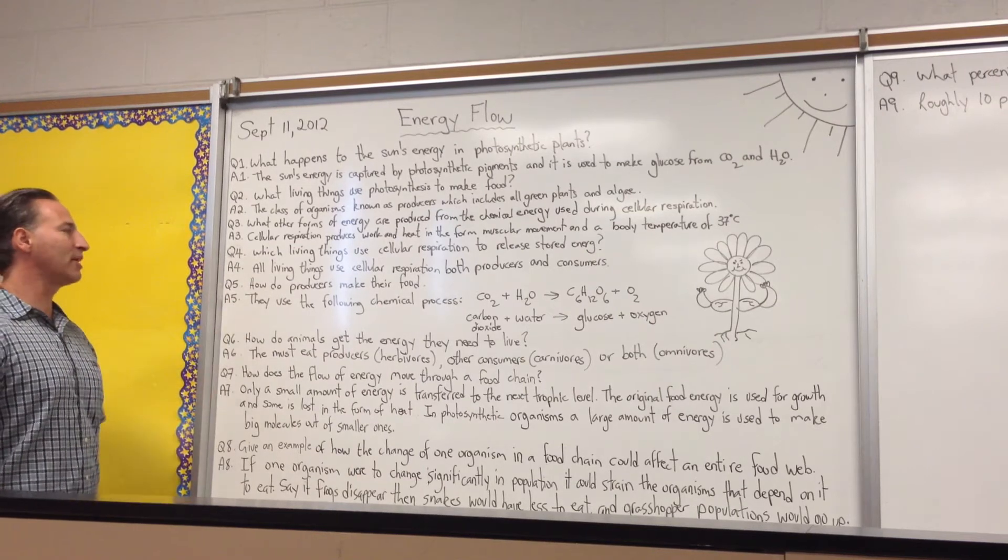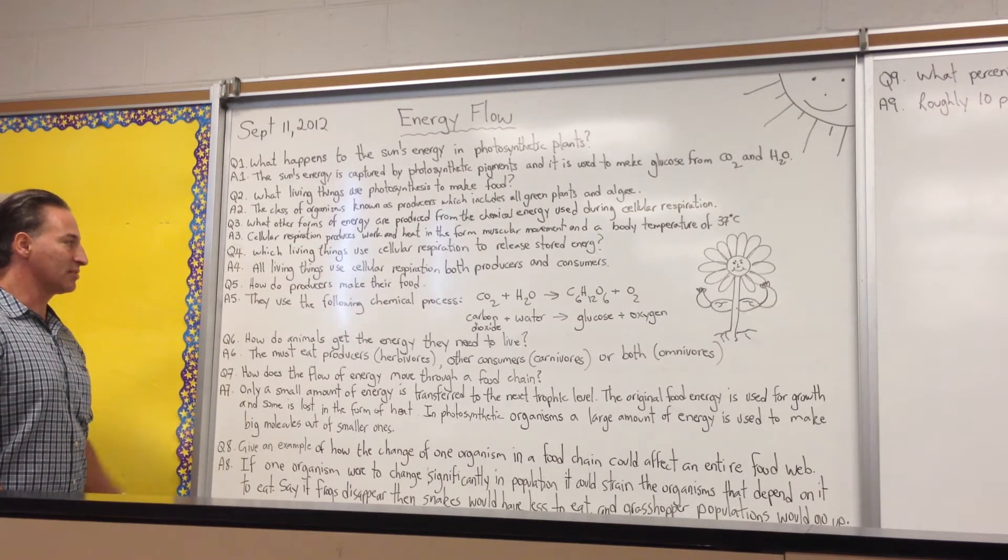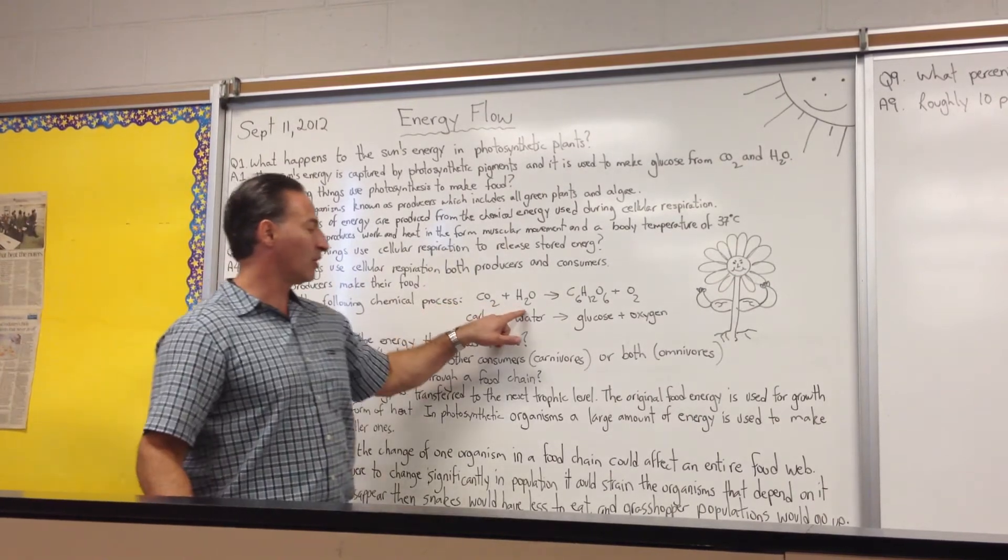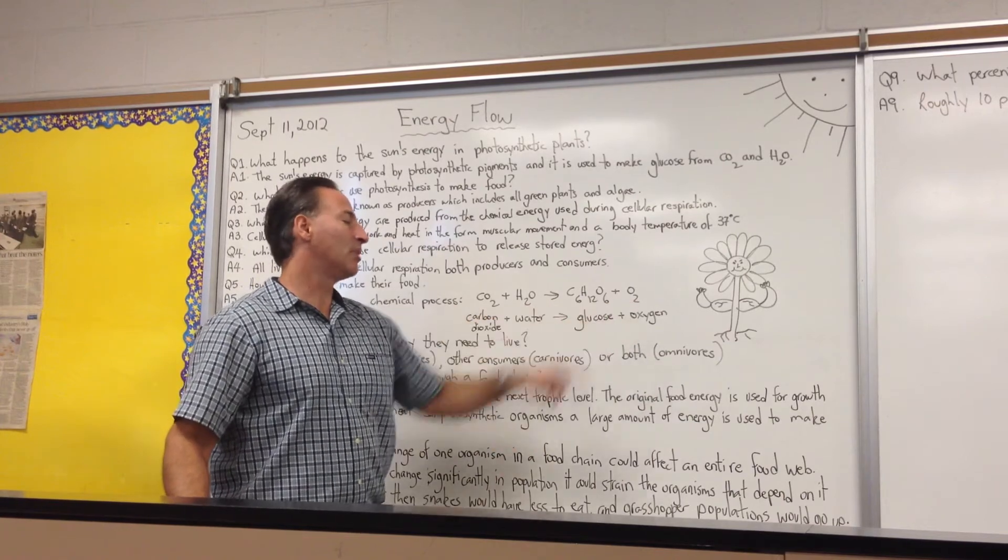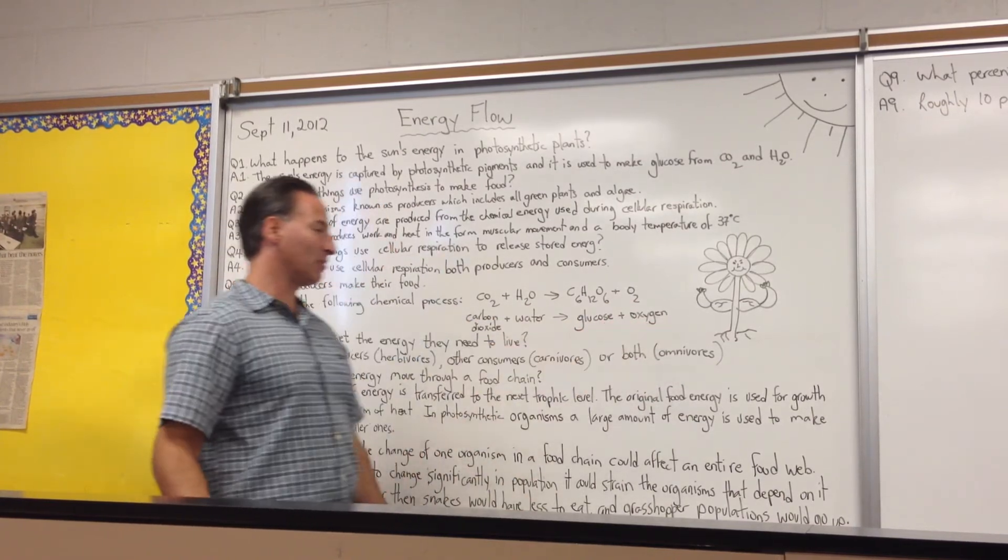How do producers make their food? They use the following chemical process. By producers, we mean anything that is photosynthetic. They use carbon dioxide plus water to form glucose. And the byproduct is oxygen. That's why plants help replenish the atmosphere by producing oxygen.